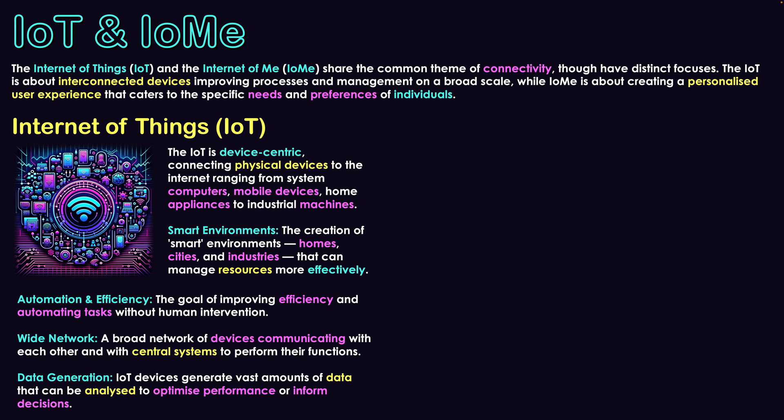These devices include computers, mobile devices, home appliances, and industrial machines, as well as the technology in the middle that sets these networks up — our routers, our satellites, our switches — all of that technology that creates this web that is the Internet.